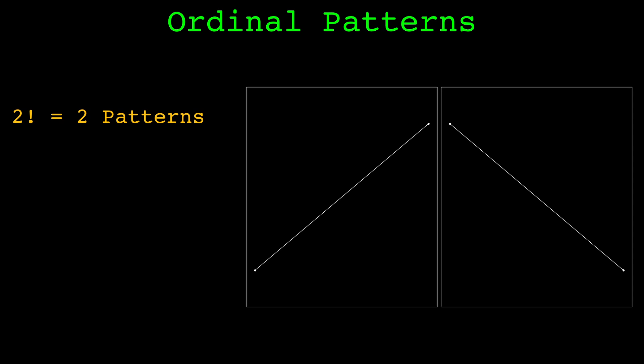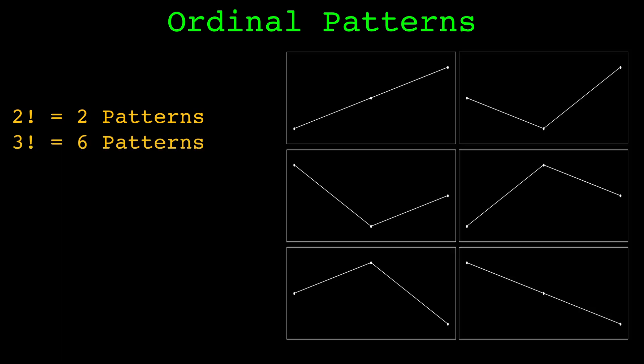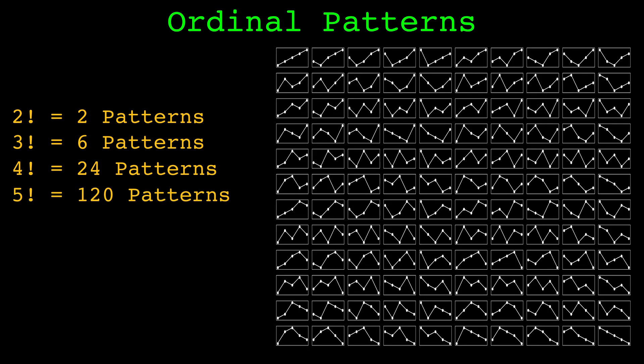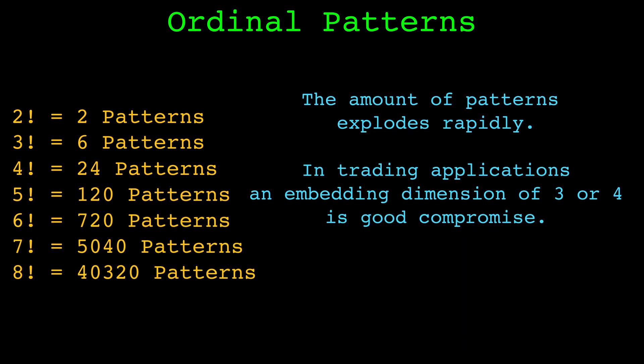The number of ordinal patterns is equal to the factorial of the embedding dimension. In the simplest case we have a dimension of two — there are two possible ways those two points could be ordered. A dimension of three gives six possible ordinal patterns, dimension of four gives 24, and dimension of five gives 120. The factorial becomes very large very quickly. In trading applications we don't have a ton of data to deal with the high number of patterns larger dimensions describe, so in practice using a dimension of three or four is typically most practical.